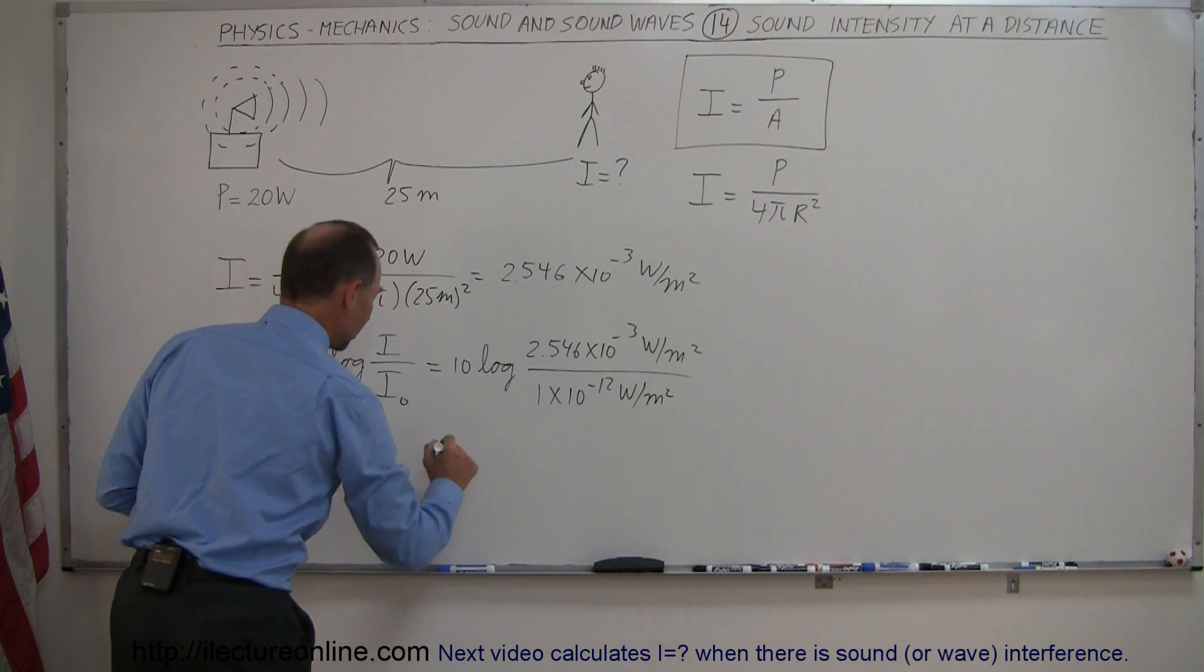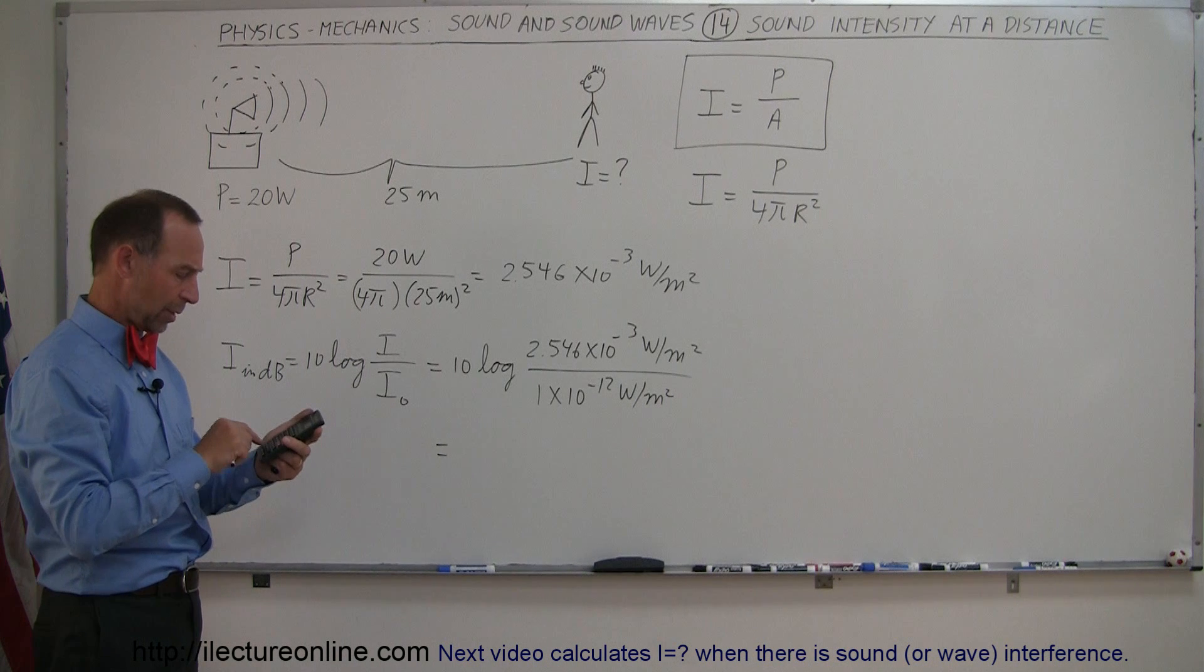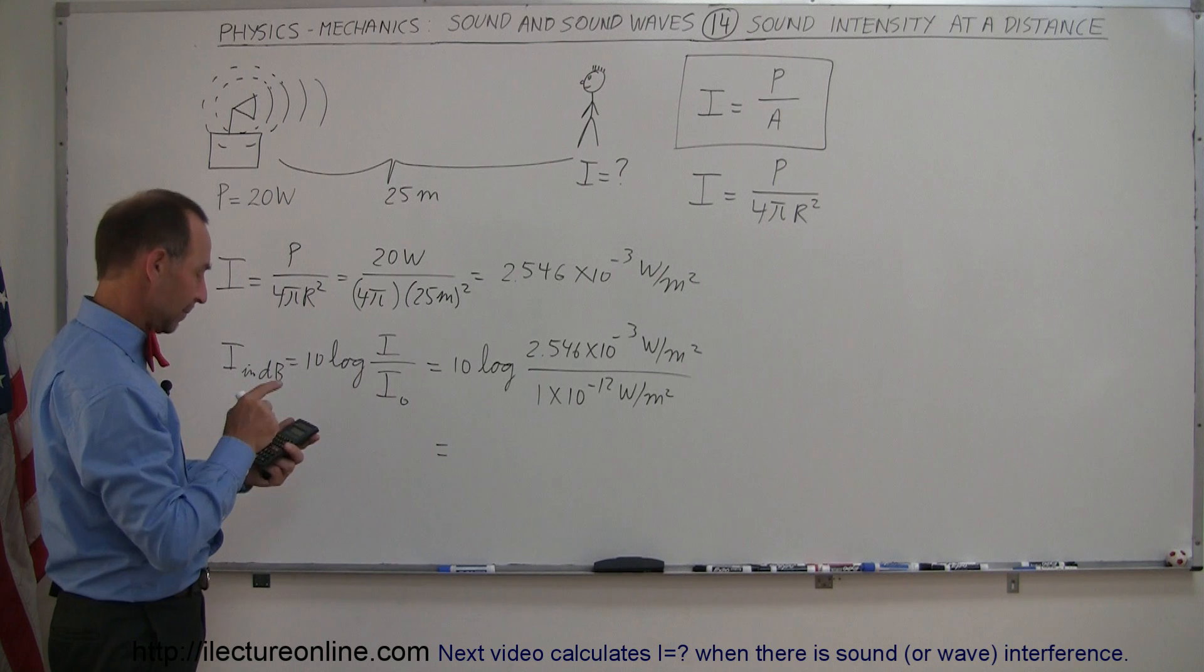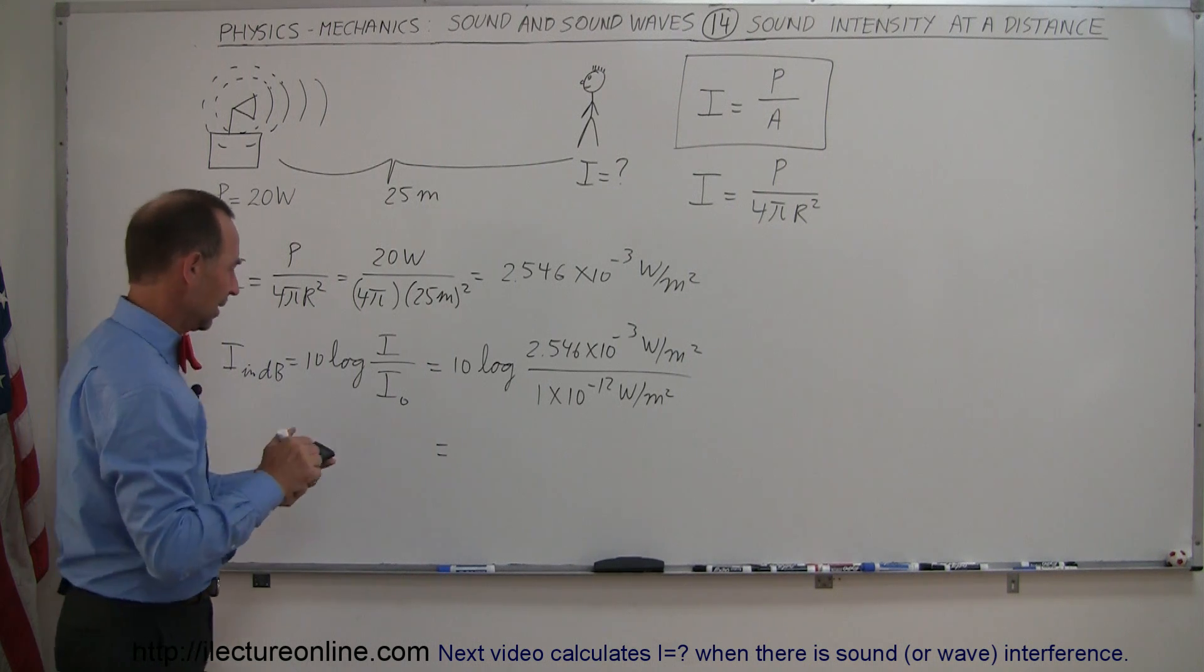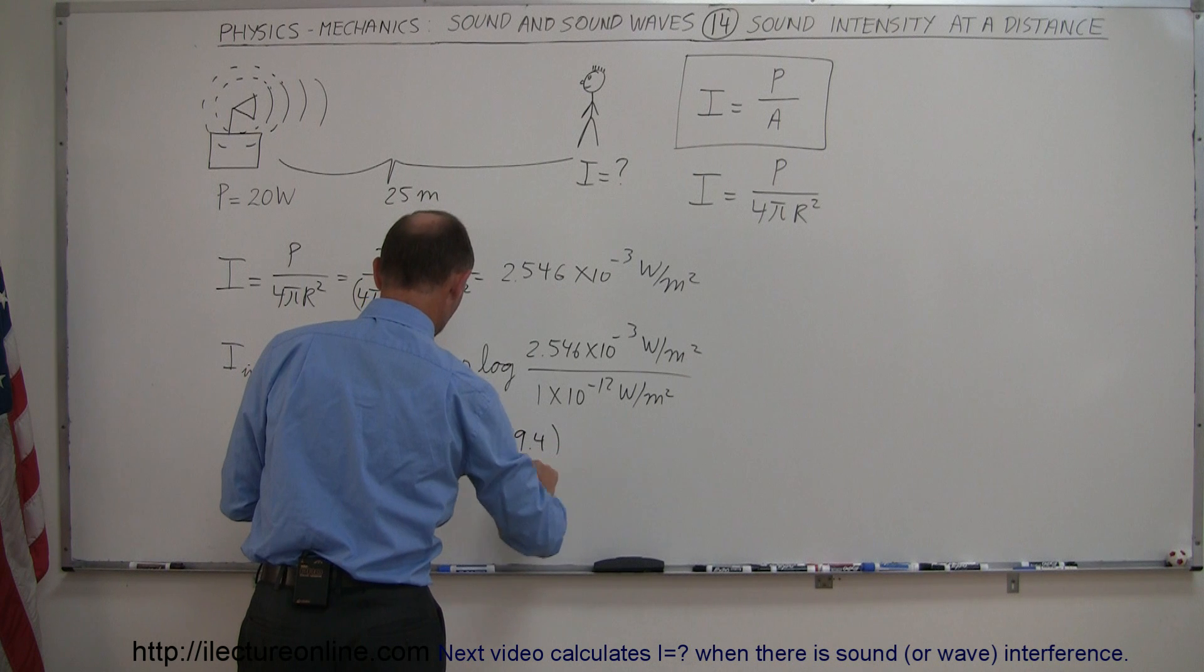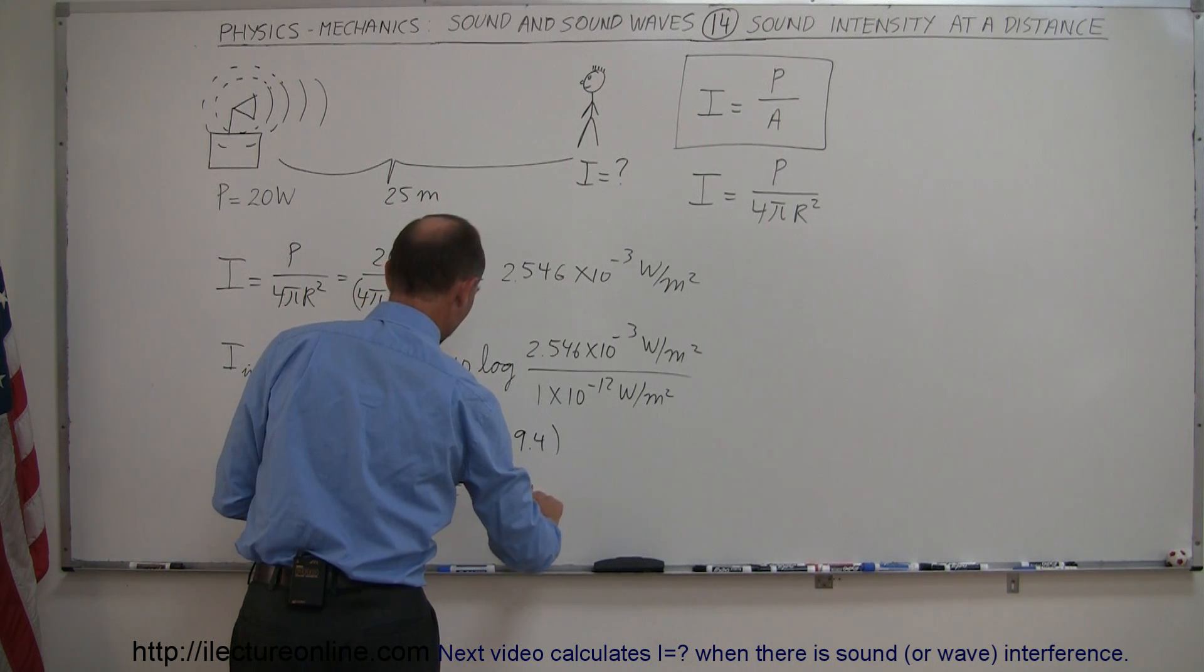And so that would be equal to - let's see - divided by 1e12 minus equals, and then take the log of that, right? So take the log, and so this is equal to 10 times 9.4, which is 94 decibels.